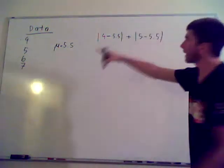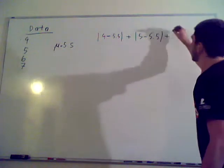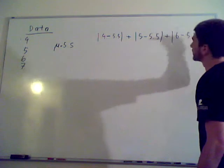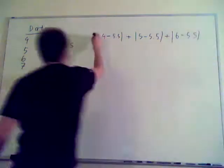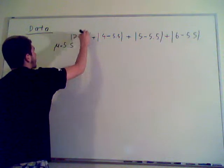So you're seeing, I'm taking all the data points and subtracting the average. So six minus five point five. I'm going to go over here. Seven minus five point five, alright?